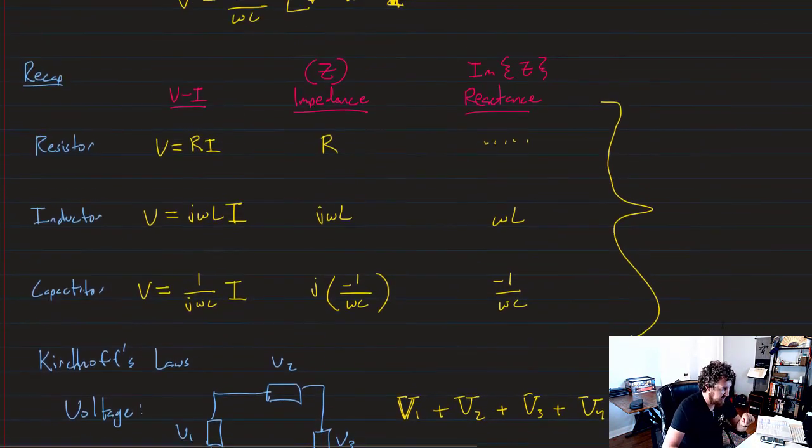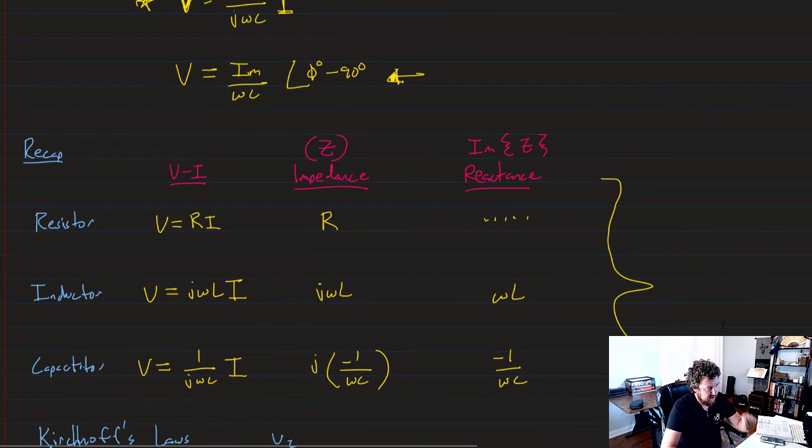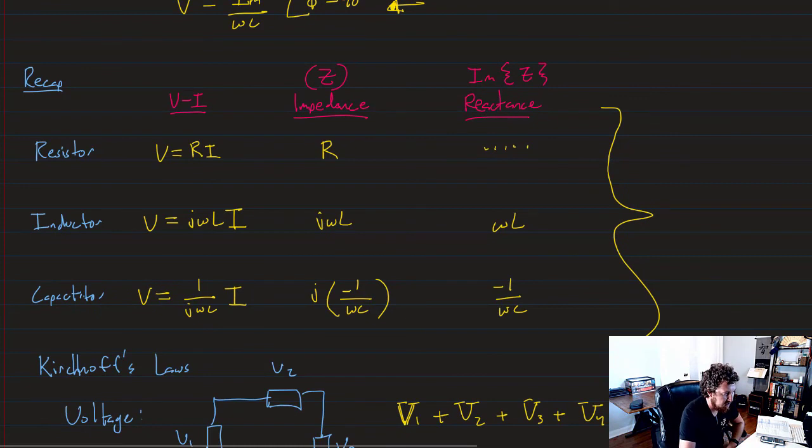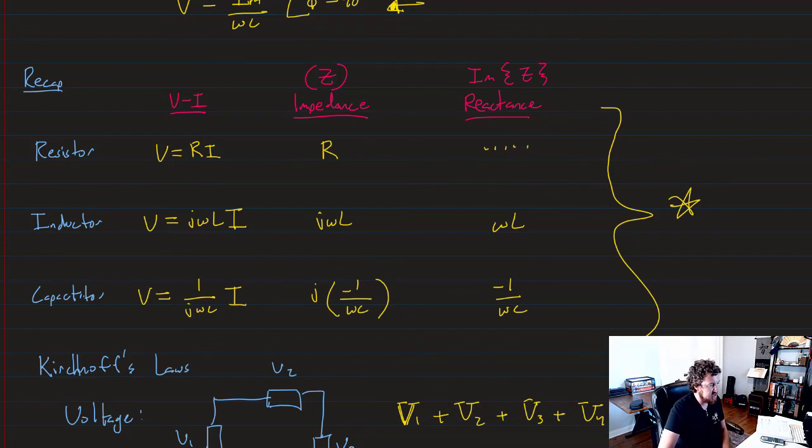So there we go. That is how we apply phasors to our passive circuit elements. And like I said, the important thing, remember the stuff just right here in this table. What are those VI relationships, and what are the impedances and reactances for resistors, inductors, and capacitors?